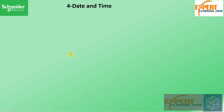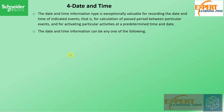The fourth data type is date and time. The date and time information type is exceptionally valuable for recording the date and time of indicated events — for calculation of elapsed period between particular events and for activation of particular activities at predefined time and date.